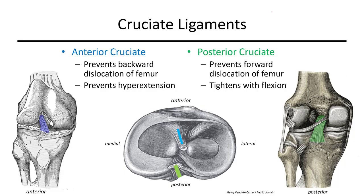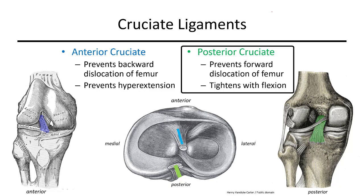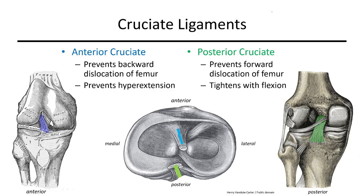Cruciate ligaments are inside the knee joint to prevent anterior or posterior motion of the femur relative to the tibia, and are named from where they attach on the tibia. The anterior cruciate ligament (ACL) can be seen under the patella on the anterior side; it starts on the tibia and moves superior and posterior to attach to the femur, preventing the tibia from moving anteriorly and the femur from moving posteriorly. The posterior cruciate ligament (PCL), in green, begins on the posterior tibia and goes up and anteriorly to the femur, preventing the femur from moving too far forward or the tibia from moving backward relative to the femur.